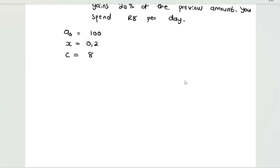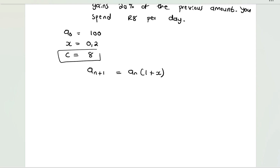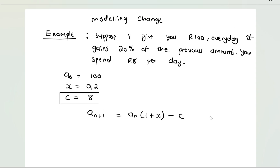The initial model from the previous lesson said that a_(n+1) is equal to a_n multiplied by (1 + x). But now we have c, so we are removing a certain amount each and every day, and we subtract c from that relation.